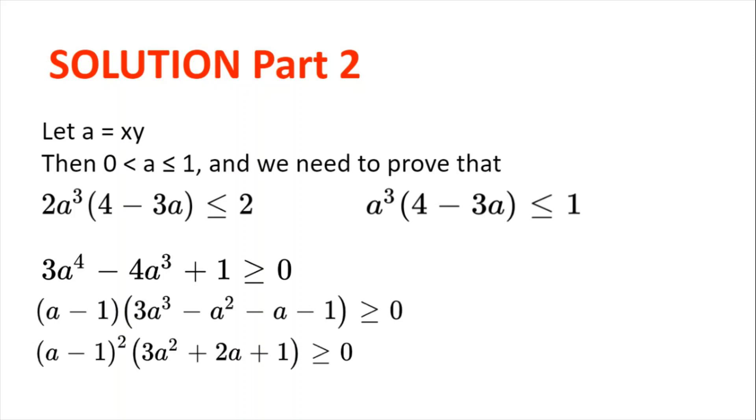Now, this is the same as a³(4 - 3a) ≤ 1, which expanding and rewriting gives us 3a⁴ - 4a³ + 1 ≥ 0.